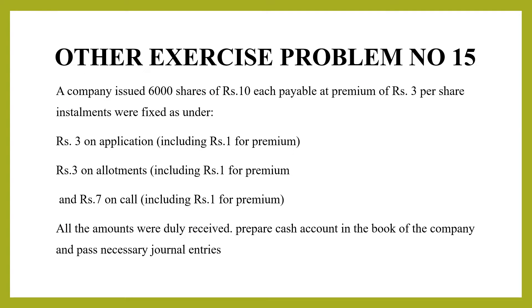In the problem, it is very easy. In a 6,000 shares issue, it is 10 rupees and with the premium of 3 rupees. Application money, allotment money, call money — everything has been received. Call-in arrears and allotment money issue — allotment money. So it is very easy to work out. Now, let's get into the problem.